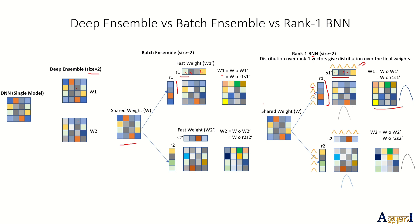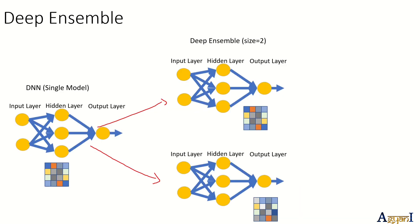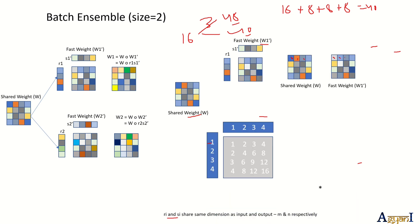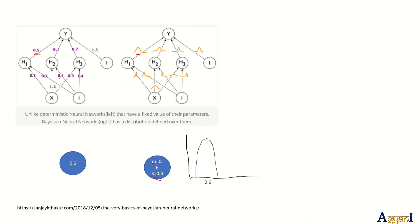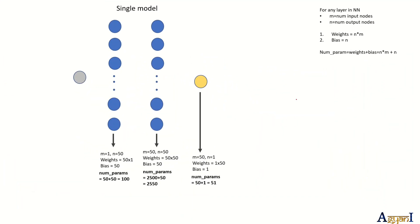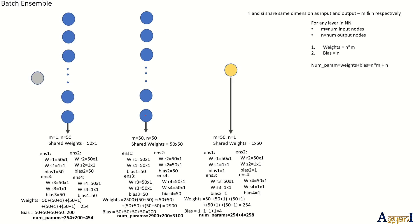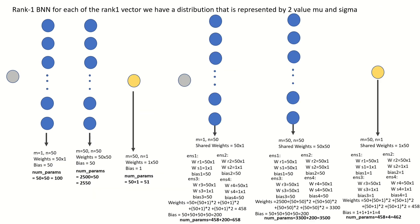I hope you got the idea of how weight matrices are defined. In the next video, we'll define an MLP — a multi-layer perceptron — and compute by hand how the parameter counts are for a simple fully connected network, then how that count changes for Batch Ensemble and Rank-1 BNN using the same demo model. So tune in to the next video where we'll compute this for a demo model. Thank you.